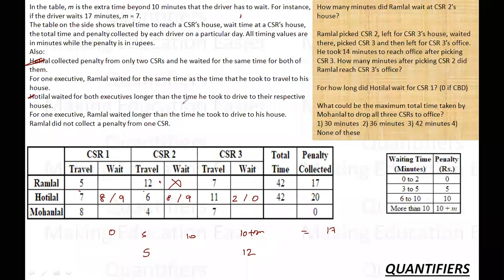Which means he must have waited for the longer time here. And how long? Since he has to collect 5 and 12, so he must wait for 12 minutes, which means here he waits for 5 minutes. Which also satisfies the condition that Ramlal waited for the same time as the time he took to travel. So 5 here and 12 here. Since the total waiting time was 18 minutes, so 12 and 5, 17. So he must have waited for 1 minute over here.